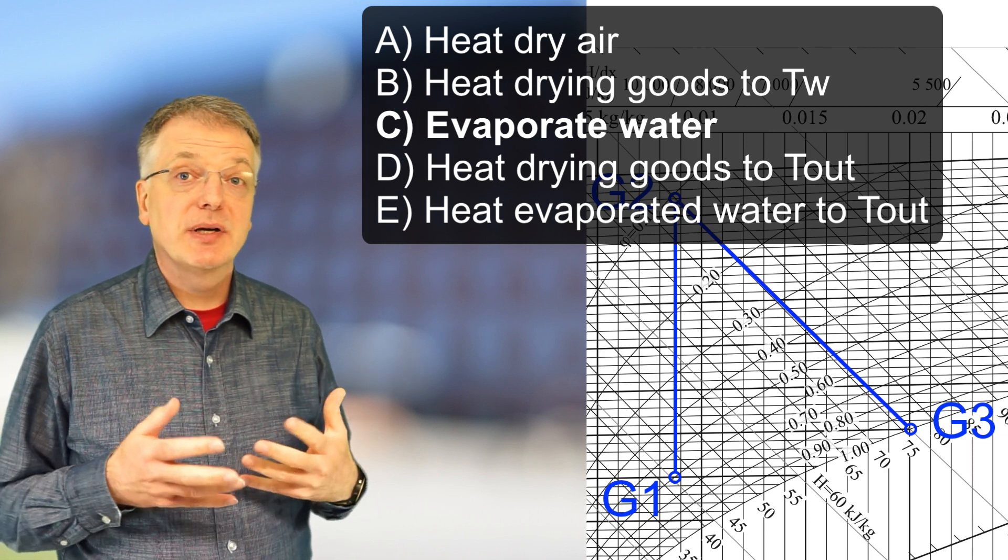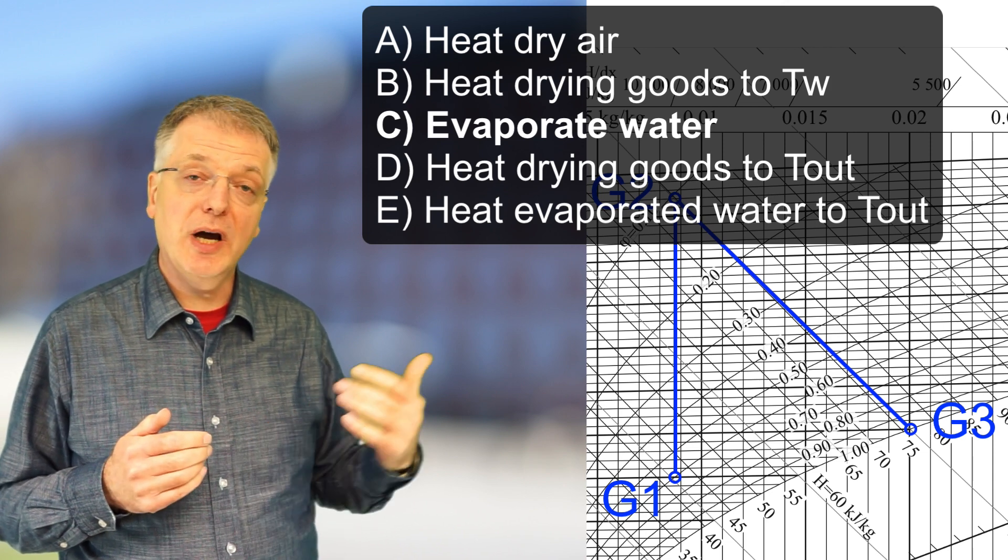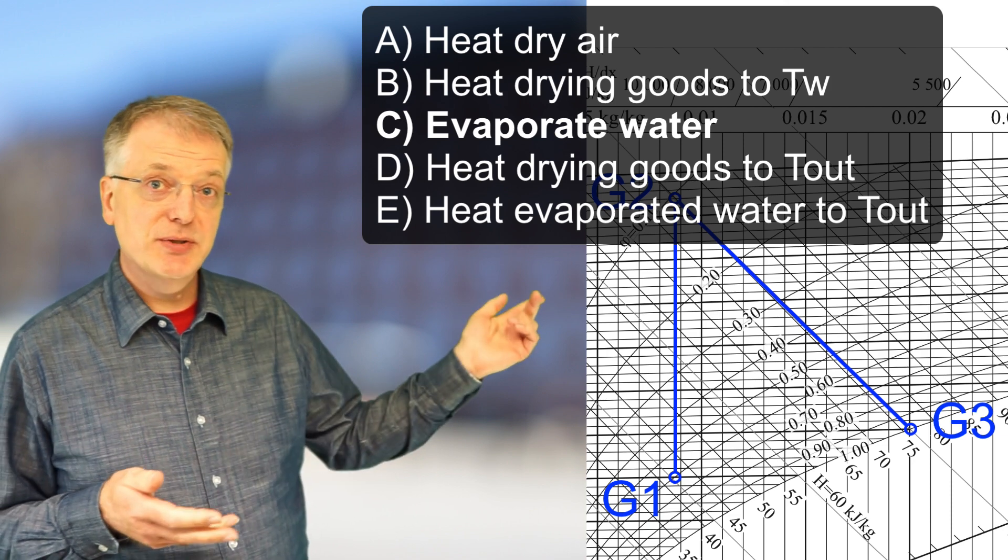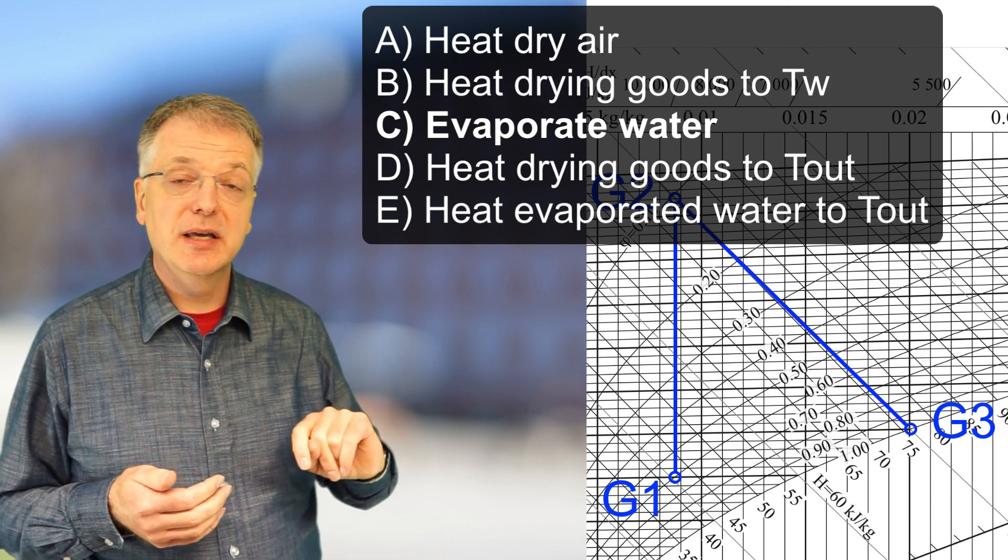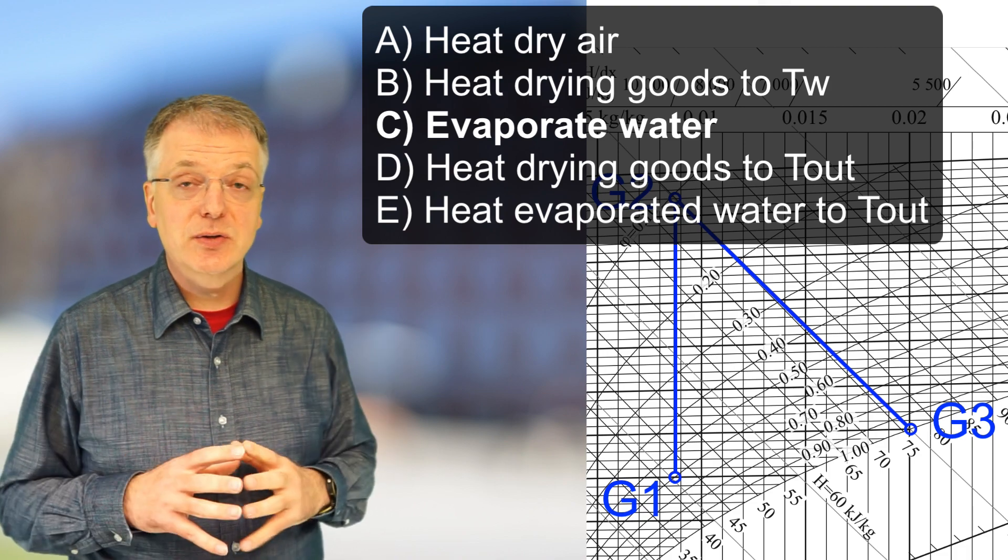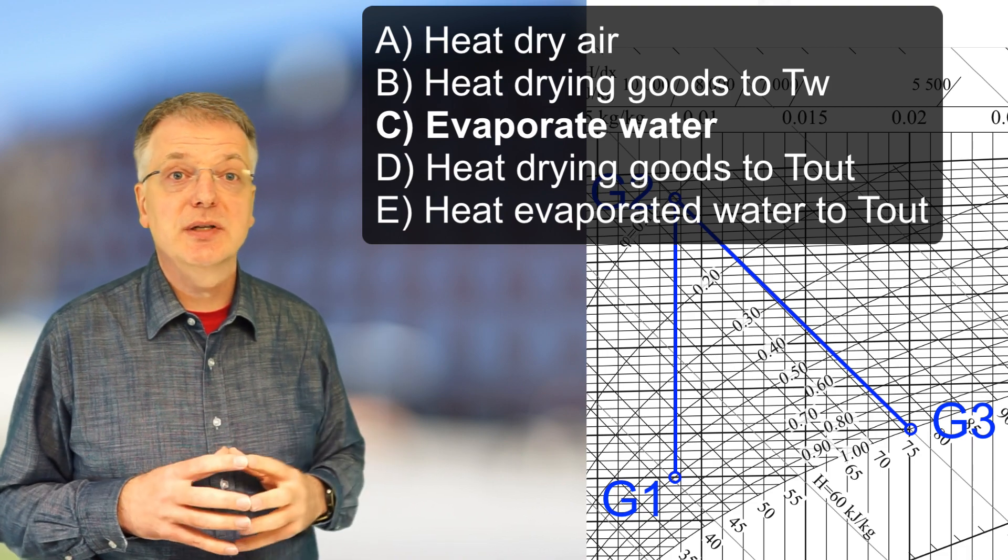E, energy is needed to heat the evaporated water from T wet to the temperature of the outgoing air. In our simple example, we assumed that the relative humidity of the outgoing air was 100%, and hence, the dry temperature of the outgoing air is the same as the wet temperature of the outgoing air. So thus, this does not contribute to the difference in our simple example.